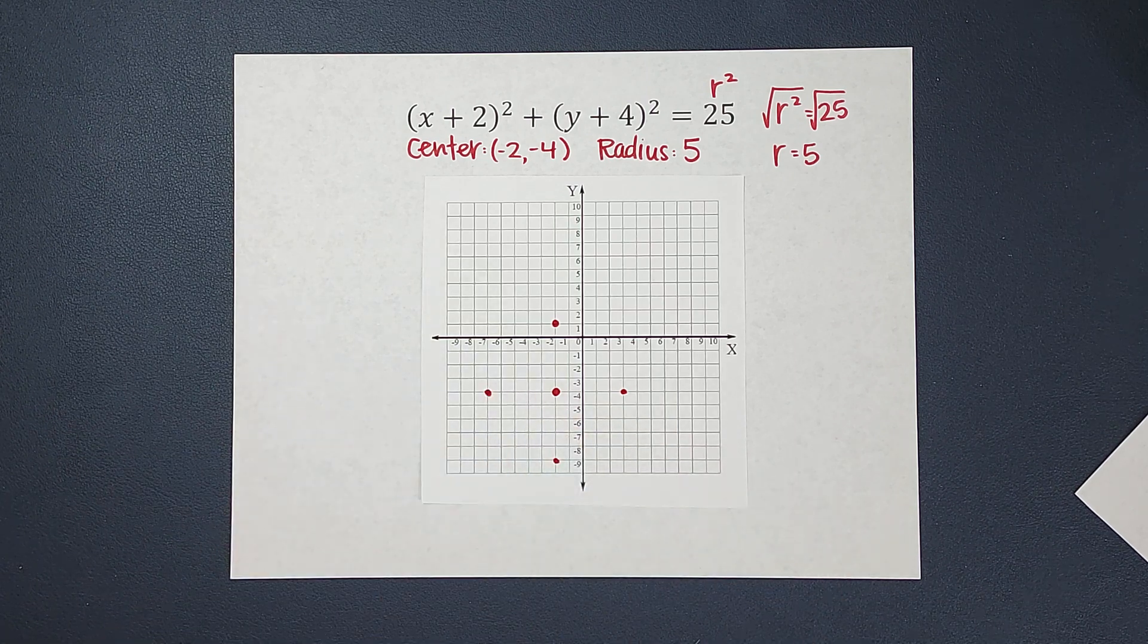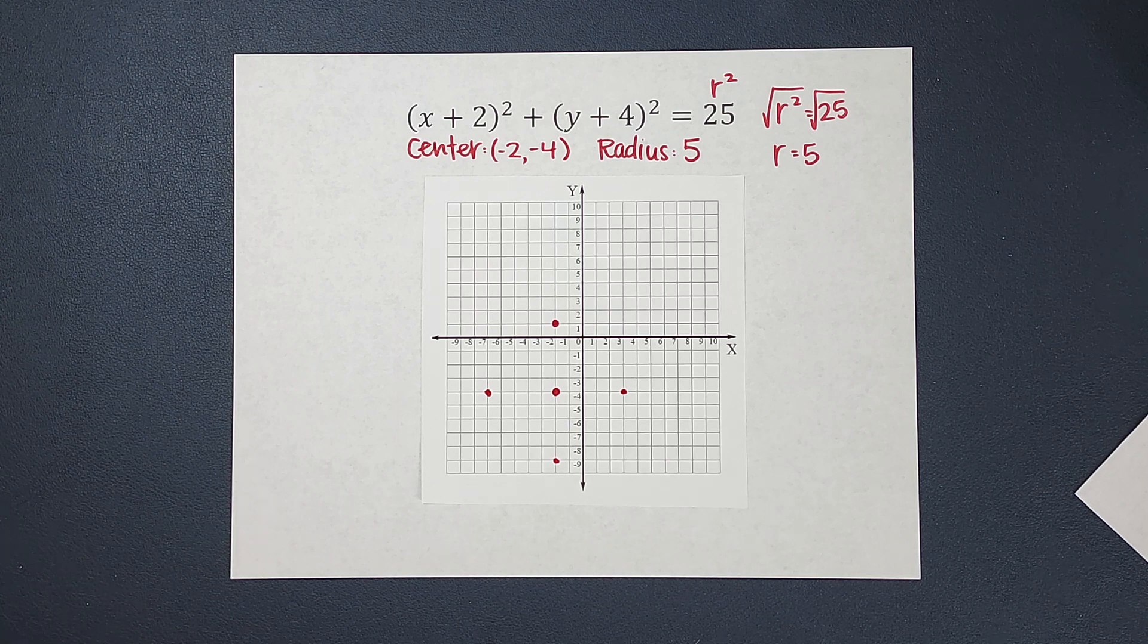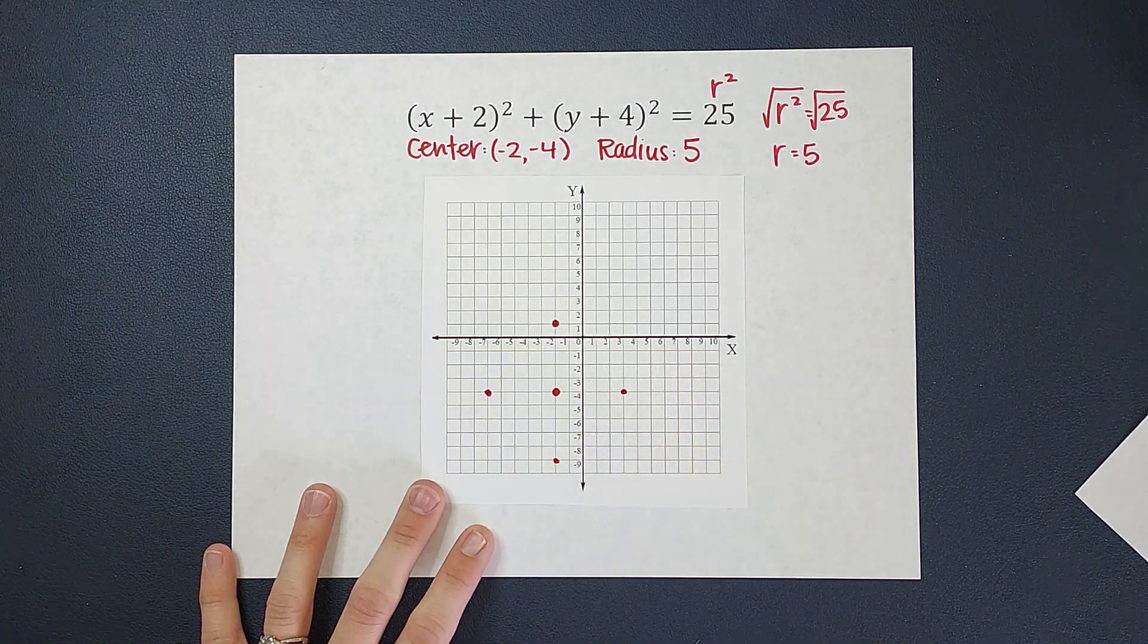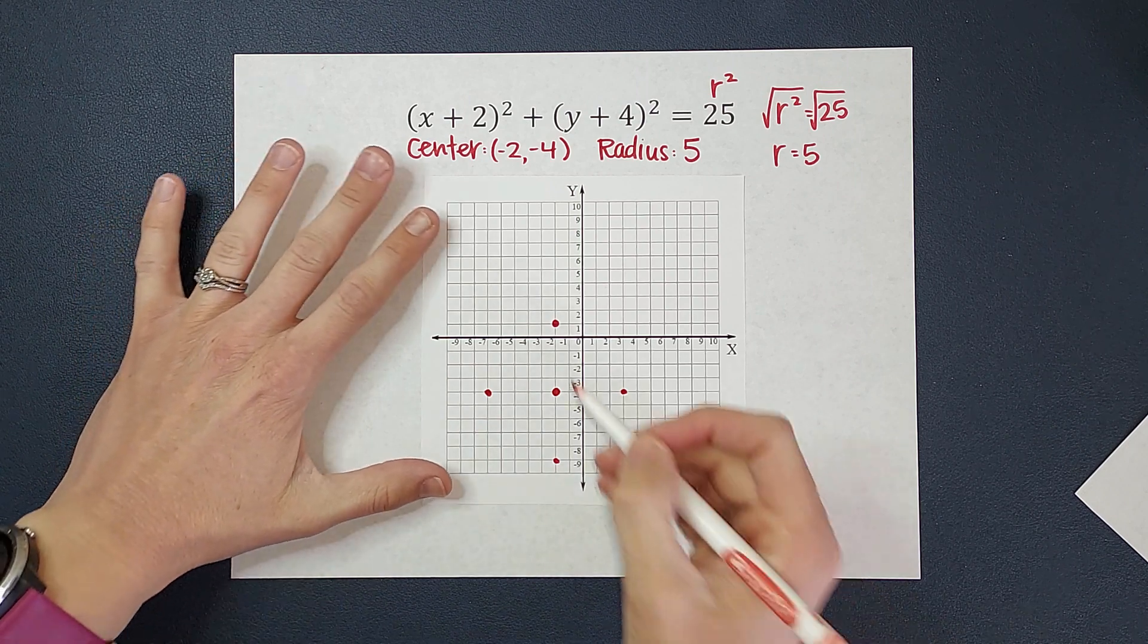Now just like with a line, we don't have to graph every point on the line, right? That would literally take forever. So we don't have to graph every tiny little point in here. Having four is a pretty good indication of what this circle looks like, right?